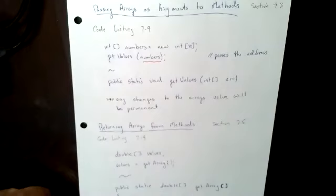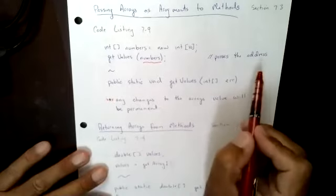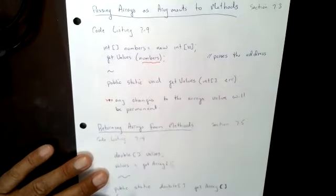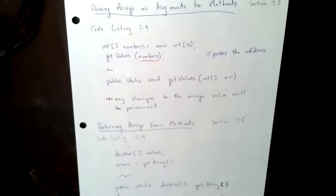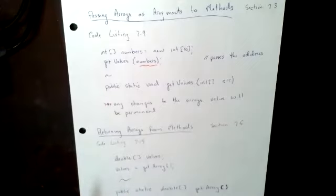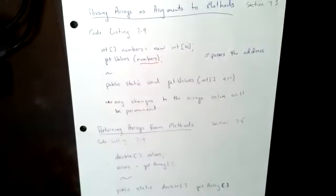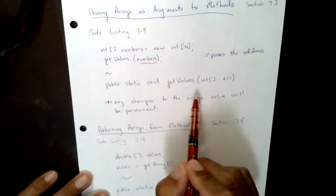Unlike other data types, arrays actually do change when you pass them — the address is passed, not the value, so when the address is passed, changes can be made. That means you don't necessarily have to return it either — that's right. So really we could stop here; we don't need to do it as a return type. But we're looking at it as an option to practice. You can get away with everything in the parameter list — when I call 'getValues', I can read all the values and store them in the array, and when it comes back, 'numbers' is good to go.